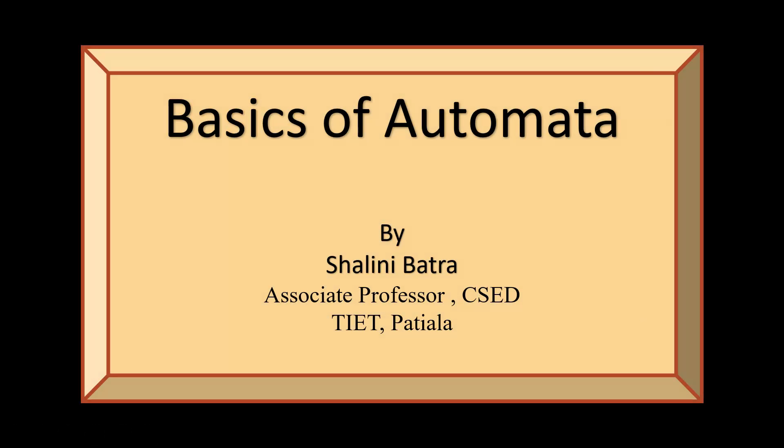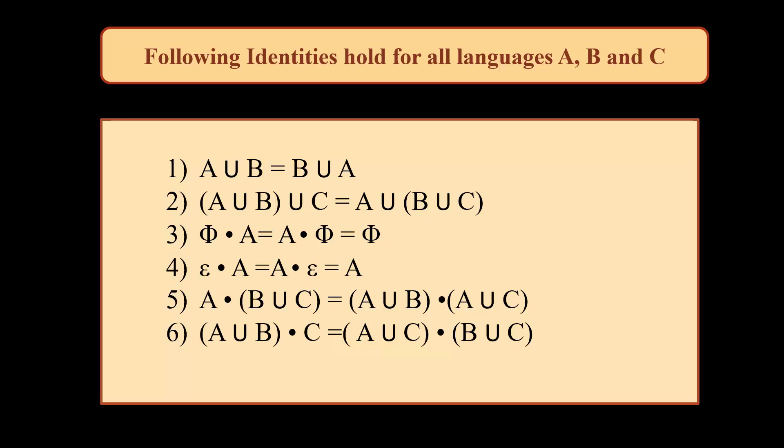Hello everyone, today we will be discussing some basics of automata. First, we start off with some identities. The following identities hold for all languages a, b, and c: a union b is the same as b union a, and a union (b union c) is equal to (a union b) union c.